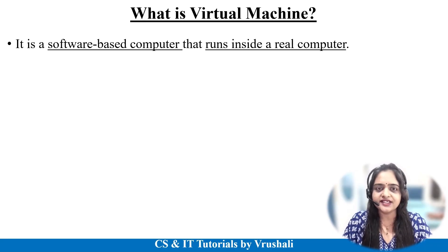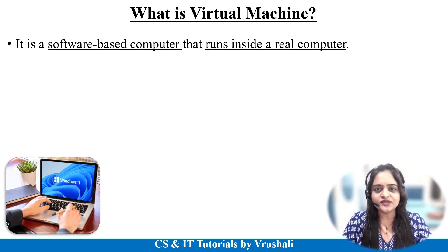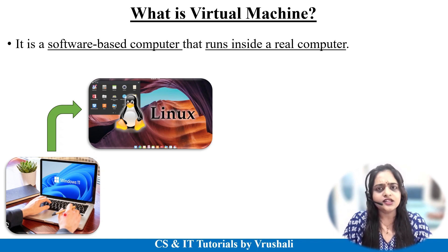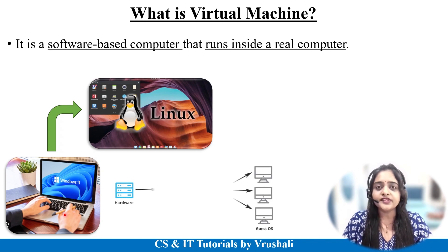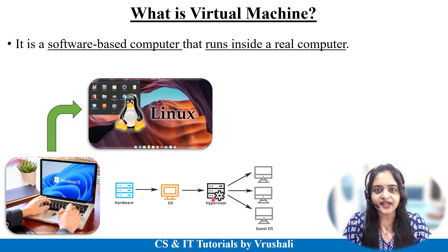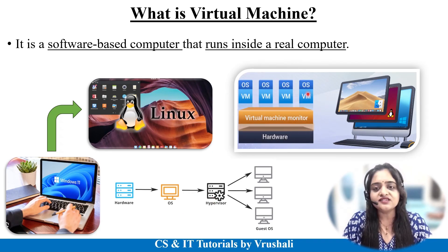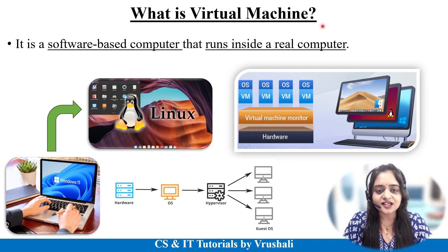Our first question is: what exactly is a virtual machine? Let's take an example. As a user, you have a Windows operating system on your physical device, but due to some reason you also want Linux. So there is a hypervisor. Because of the hypervisor, you can install multiple operating systems on the same physical device. These multiple operating systems are called virtual machines, and this complete process is called virtualization.